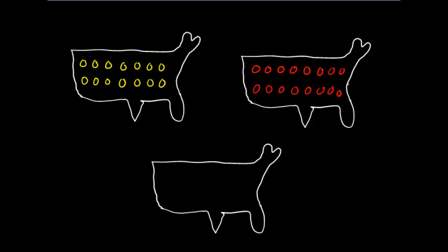We've drawn two situations here: one in which everybody in the United States is a non-smoker, and one in which everyone is a lifetime smoker. Let's say that if everyone in the United States population was a lifetime smoker, the risk of lung cancer among them would be 10%. And if everyone was a non-smoker, the risk of lung cancer would be 2%.